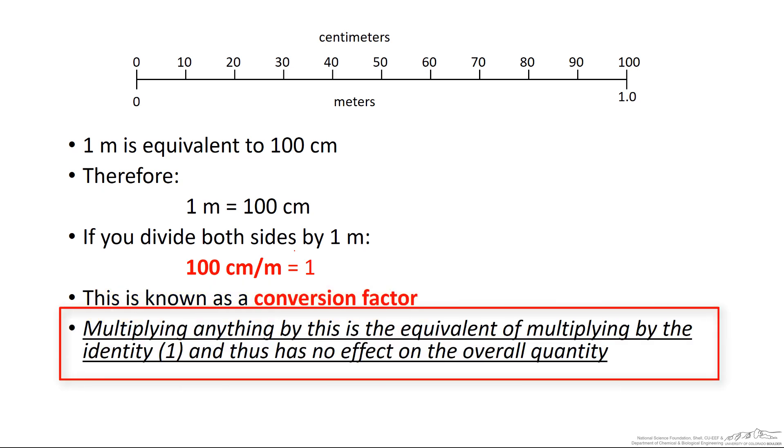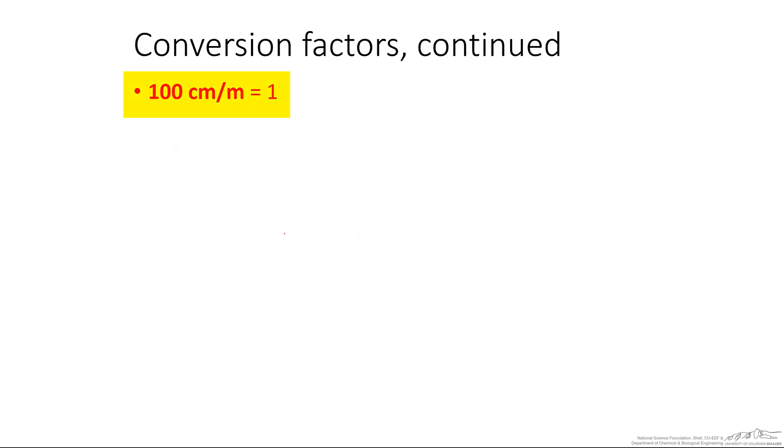And this is known as a conversion factor. Multiplying anything by this, the left hand side, or any conversion factor that you put together for any system of units, is the same as multiplying by the identity, one, and thus has no effect on the overall quantity. So 100 centimeters per meter is equal to one. Or equivalently, I could have flipped this upside down, 0.01 meters per centimeter equals one. So that's another conversion factor. So I derived that just by taking the inverse of that red line up there.